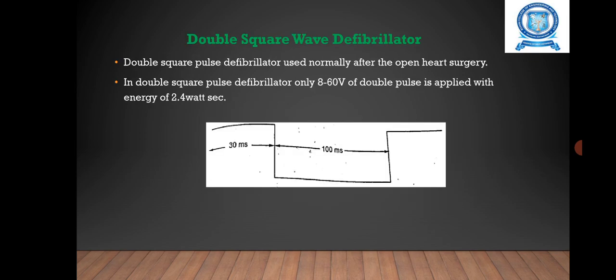The double square wave defibrillator is used normally after open heart surgery. Only 8 to 60 volts of double pulse is applied with energy of 2.4 watt-seconds. Complete defibrillation can be obtained by selecting the proper pulse space ratio. It is very efficient and allows quick recovery of the heart to beat in a normal manner without any side effects. A low voltage pulse and simple circuit is used, also applicable in digital pacemaker circuits.